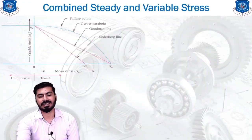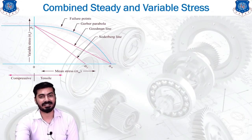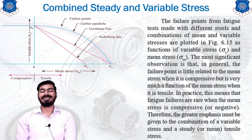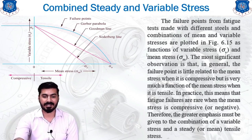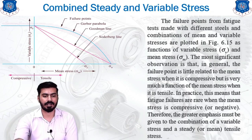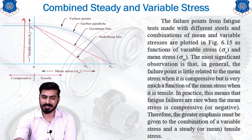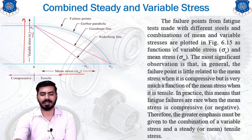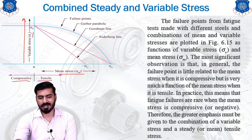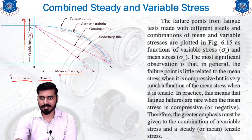Whenever variable and steady stresses are applied on a body, there are different combinations and methods to solve these conditions, as represented on the diagram on screen. On the y-axis (vertical axis) you can identify the variable stress, represented by sigma-v, and on the horizontal axis you will find the mean stress. Positive values are considered tensile and negative values compressive. Most of the failure points are represented by the dots shown in the diagram.